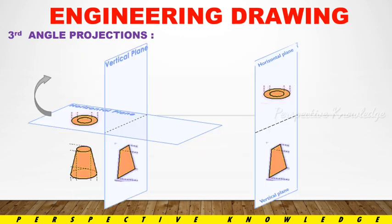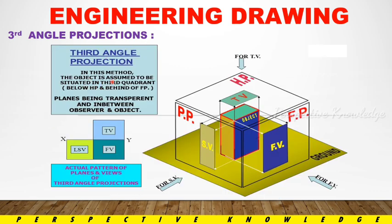Next is the third angle projection. The object is assumed to be situated in the third quadrant — that is below HP and behind the front plane. This is the third quadrant. If you want to get to the horizontal plane, the front plane is shown to the side. This is the third angle projection: the top view is on top and the front view is on the bottom.